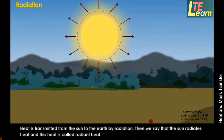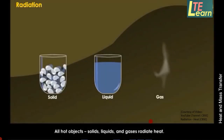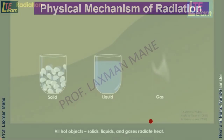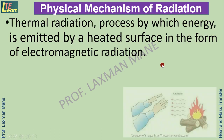Heat is transmitted from the sun to the earth by radiation. We say that the sun radiates heat, and this heat is called radiant heat. All hot objects — solids, liquids, and gases — radiate heat. Thermal radiation is a process by which energy is emitted by a heated surface in the form of electromagnetic radiation.